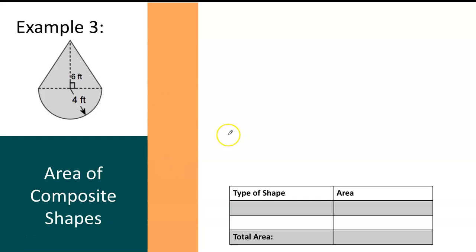In this video we're going to be finding the area of this composite shape. The first thing I want you to do is try to separate this composite shape into individual shapes that you recognize, that you know how to find the area of.